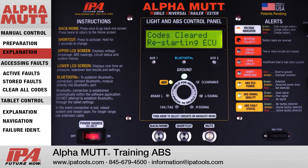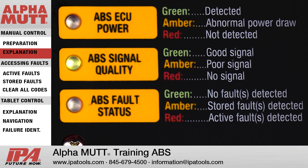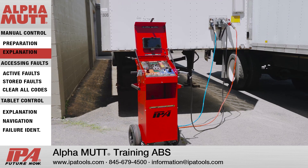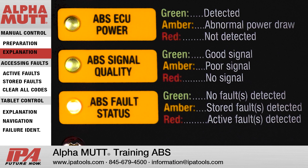The user must then request fault codes again to verify that there are no active faults. Each Alphamut provides ABS data status lights, which indicate the status of information either being sent to the trailer in the form of commands or information being broadcasted from the trailer to the tester. When troubleshooting ABS connectivity issues, it is imperative for the technician to view these status LEDs.